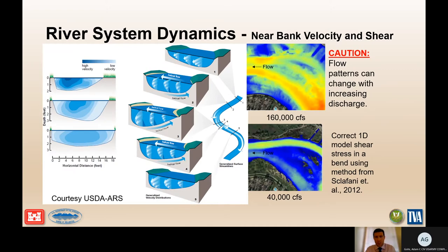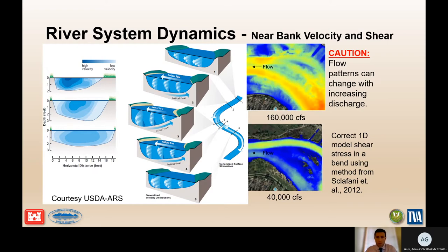As rivers flow around a bend, the momentum of the flow tends to cause higher velocities to concentrate on the outside of the bend, as shown in this graphic. As you move from cross-section one through cross-section three, you can see the higher velocity shifts toward the outer bank. You also start getting helical flow — cross-currents going across the top of the channel and returning along the bottom in the opposite direction.